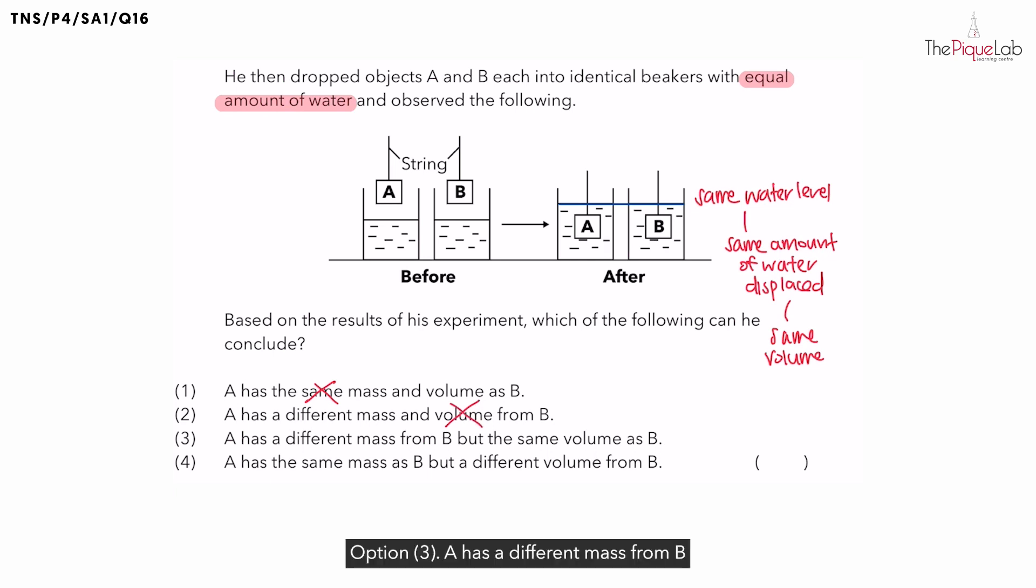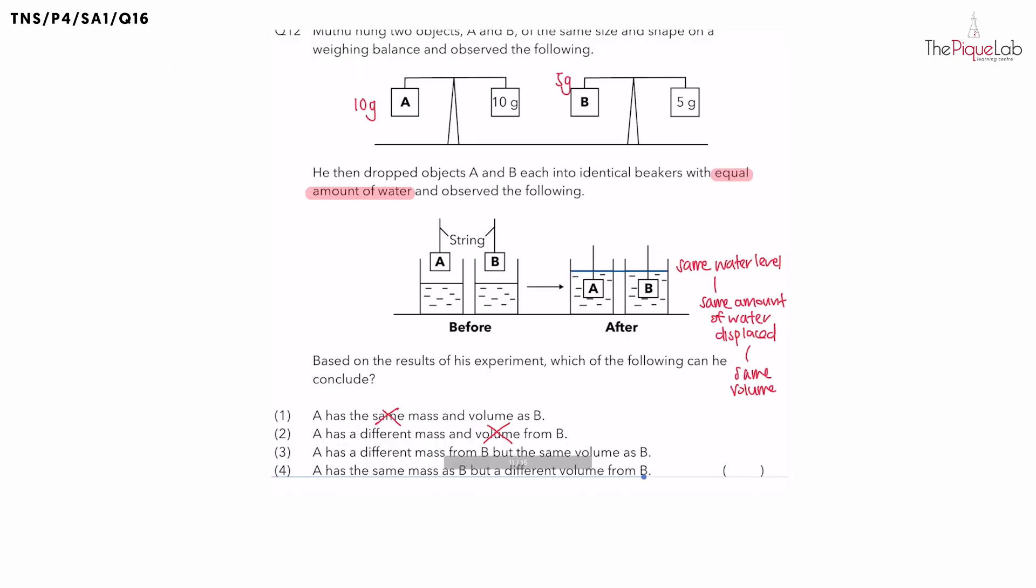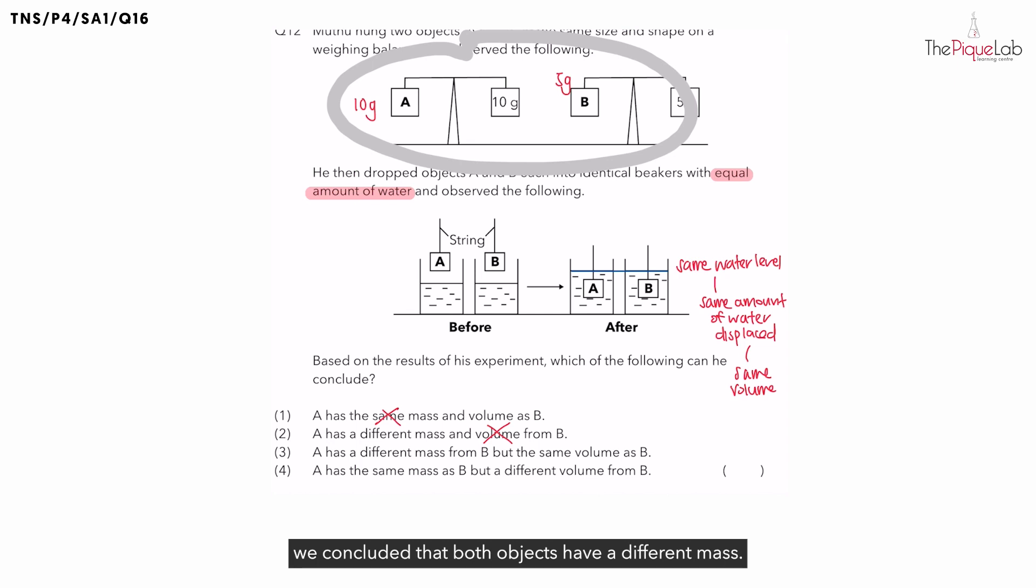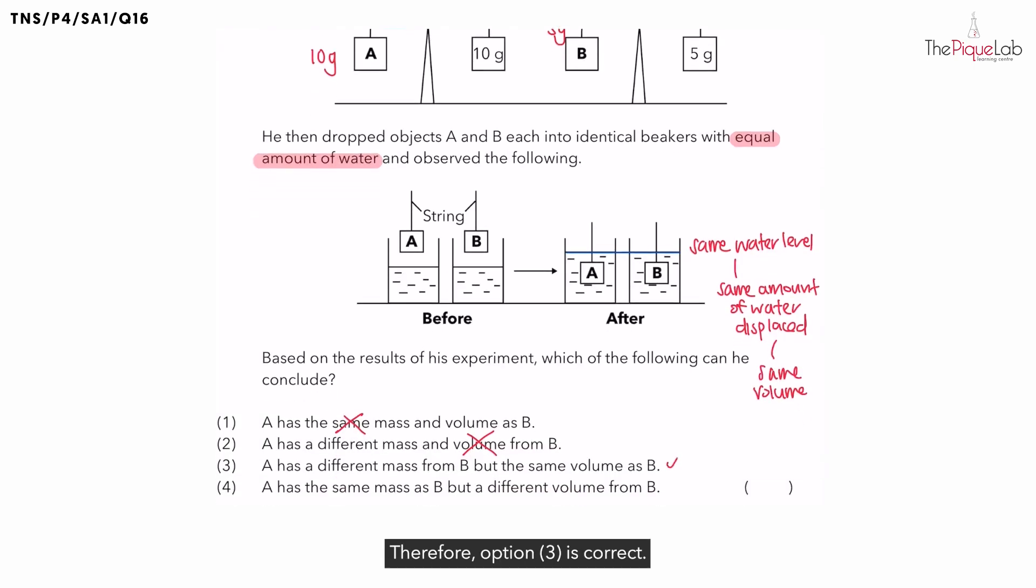Option 3. A has a different mass from B, but both objects have the same volume. Is it true that both objects have a different mass? Yes. From this experiment, we concluded that both objects have a different mass. What about the volume of both objects? Is it the same? Yes. We concluded from this experiment that both objects have the same volume. Therefore, option 3 is correct.